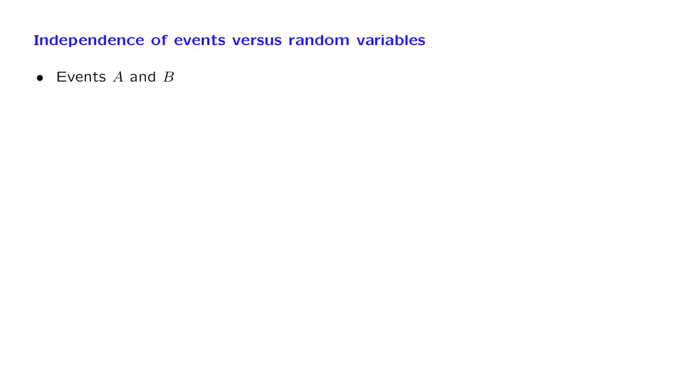For two events, we know what it means for them to be independent. The probability of their intersection is the product of their individual probabilities. Now, to make a relation with random variables, we introduce the so-called indicator random variables.